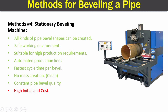The final method of beveling is using a stationary beveling machine. This is used for high production because it is the fastest beveling method. There is no mess created in this process, and since this machine has a full set of tools available, any shape of bevel can be created very quickly. It provides a safe working environment. The best thing about this method is that it delivers constant pipe bevel quality, which means the best welding quality. The only drawbacks are the high initial cost and high maintenance cost.